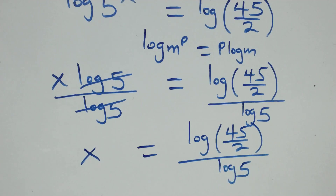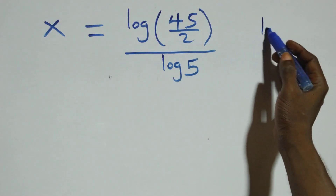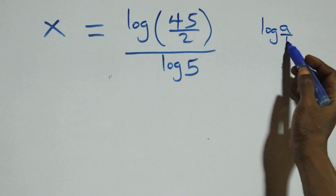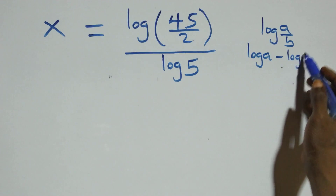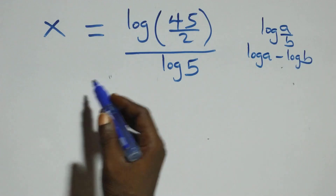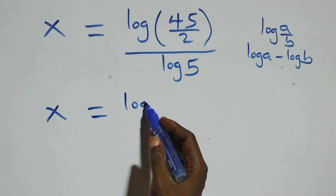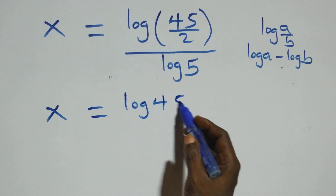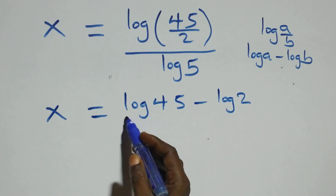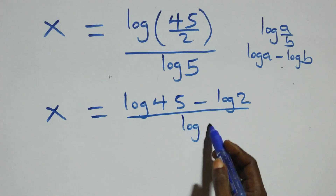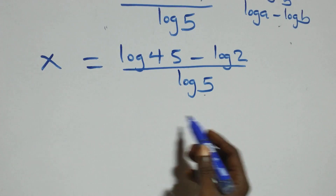We apply the law of logarithms: log(a/b) equals log a minus log b. So what we have becomes x equals log 45 minus log 2, all over log 5.